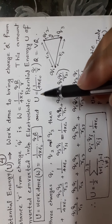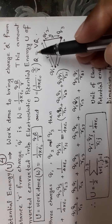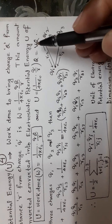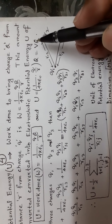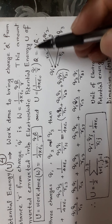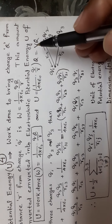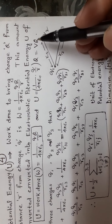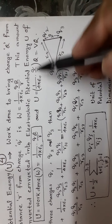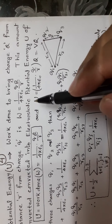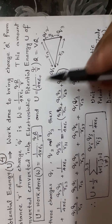Potential energy equals potential multiplied by charge. The potential energy is equal to work done.